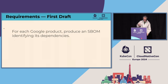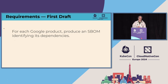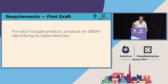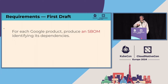As a product person, I started thinking about the requirements. I got this email — we're going to do something with SBOMs to comply with the executive order. Let's think about what the actual requirements are. I started here, simple enough: for each Google product, we're going to produce an SBOM and identify the dependencies of that product. Simple enough. But then you look a little bit closer, and you go — an SBOM, maybe some more specificity is needed.